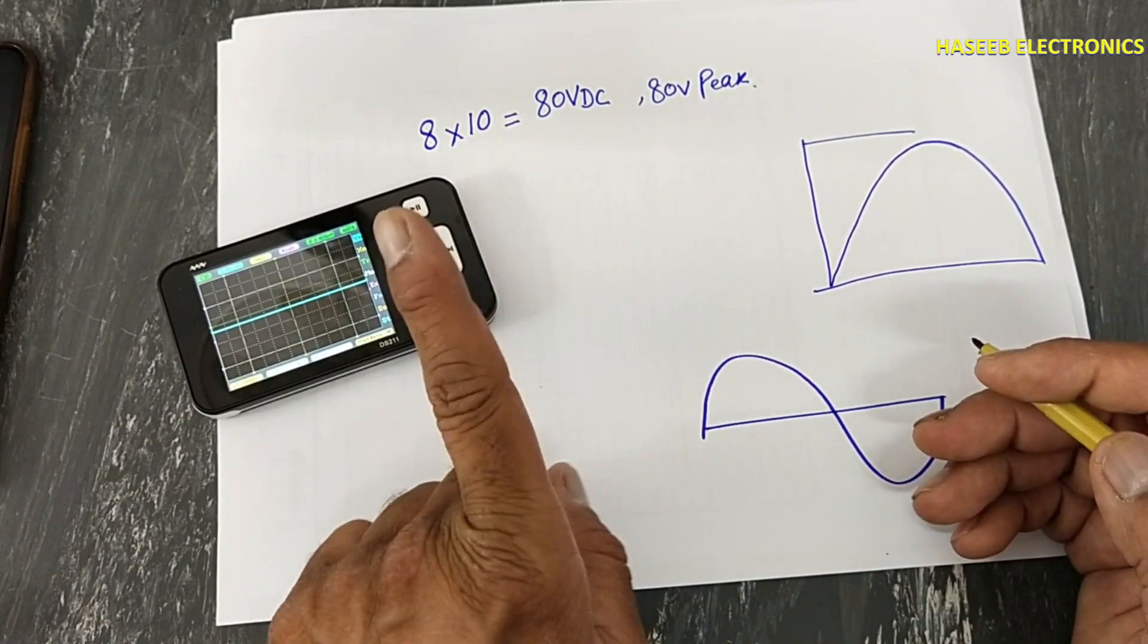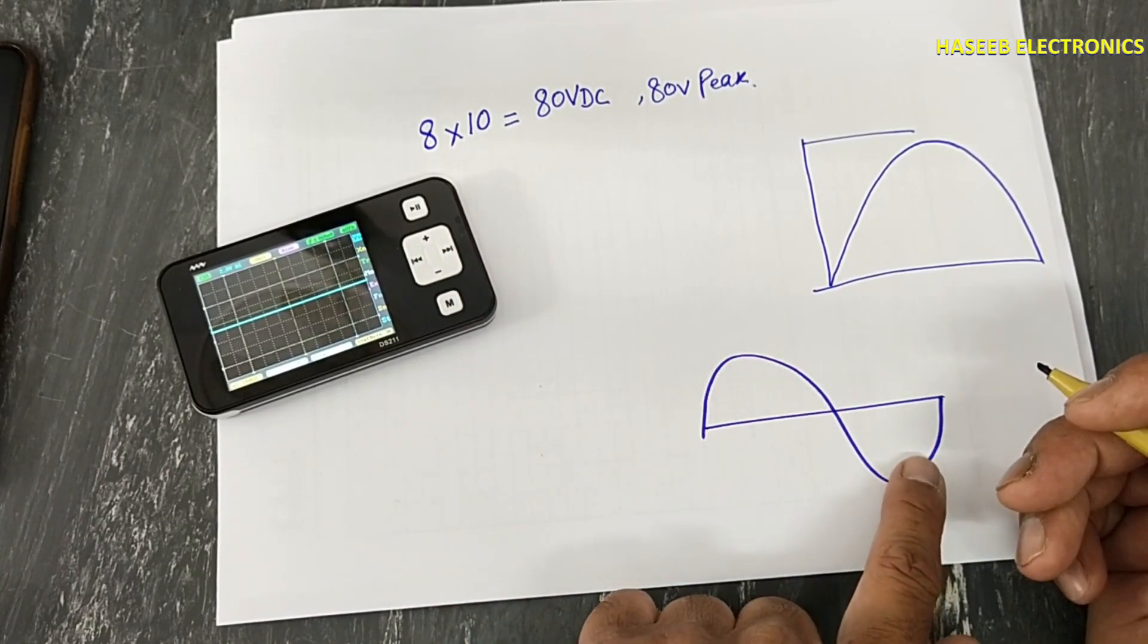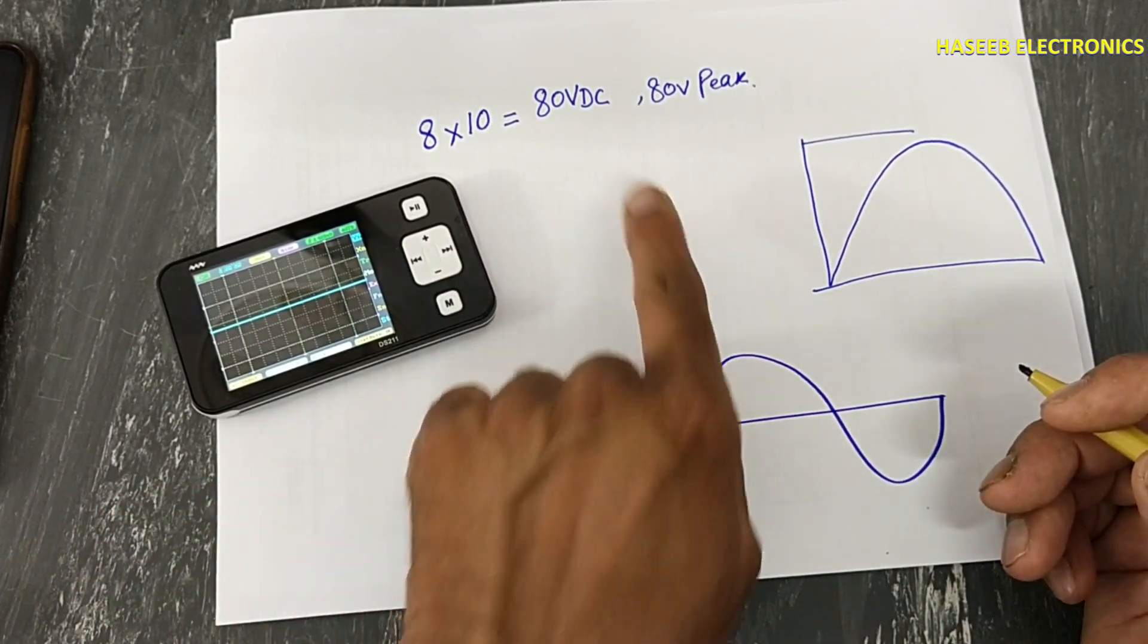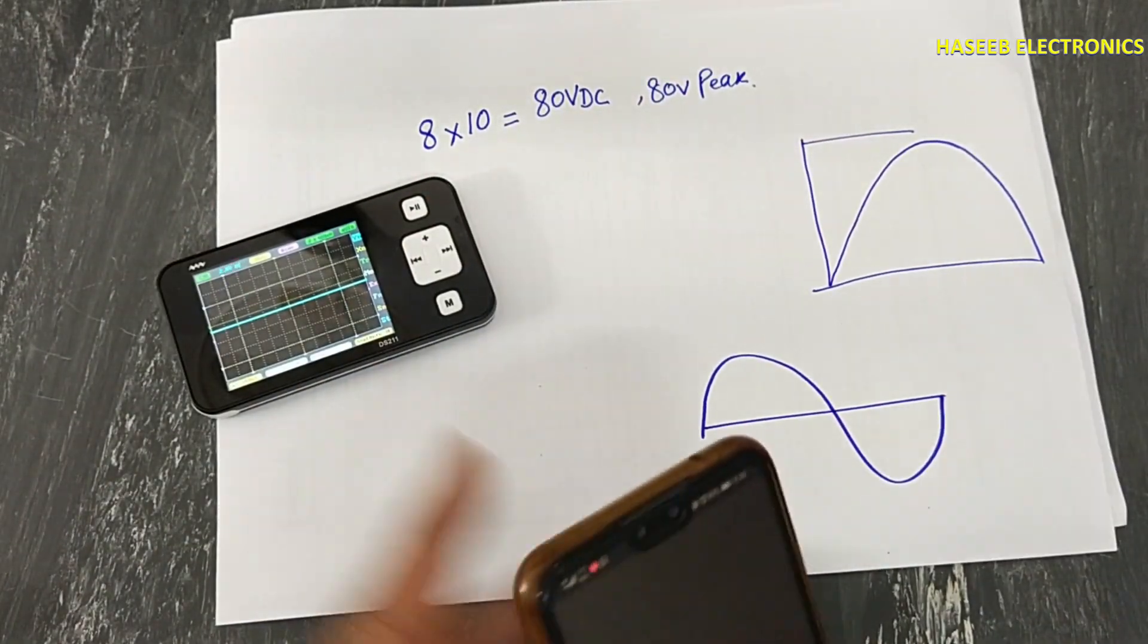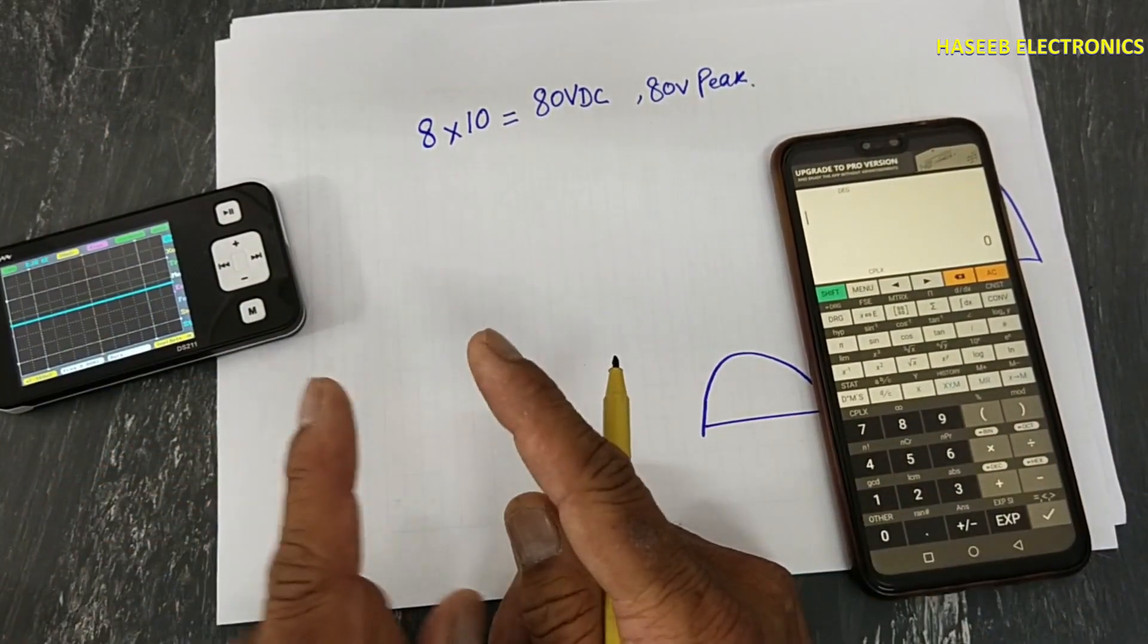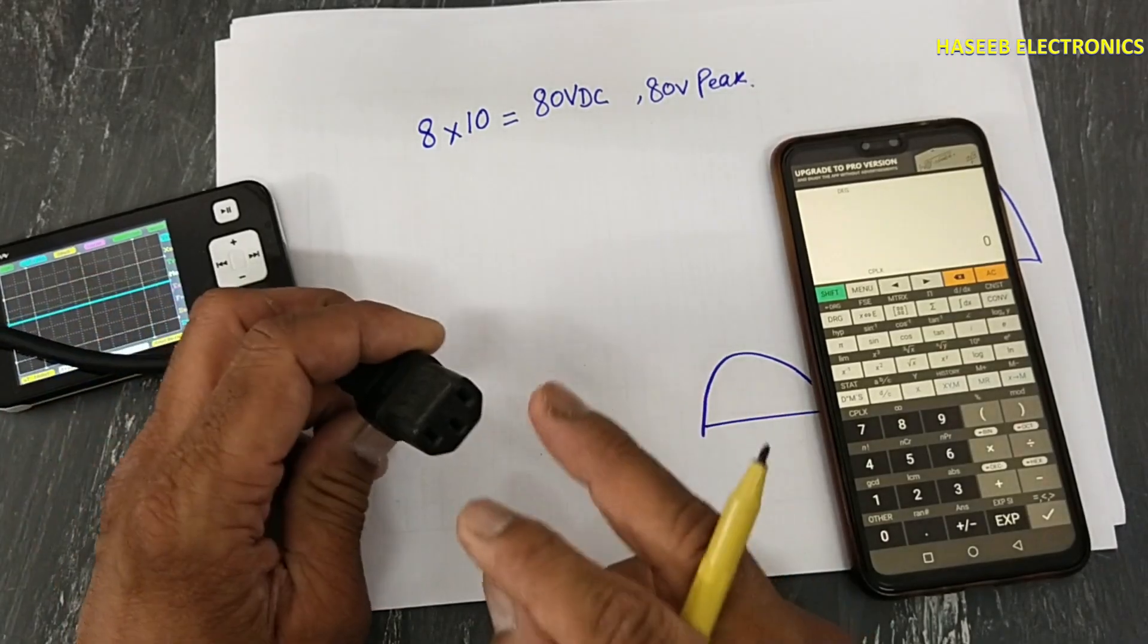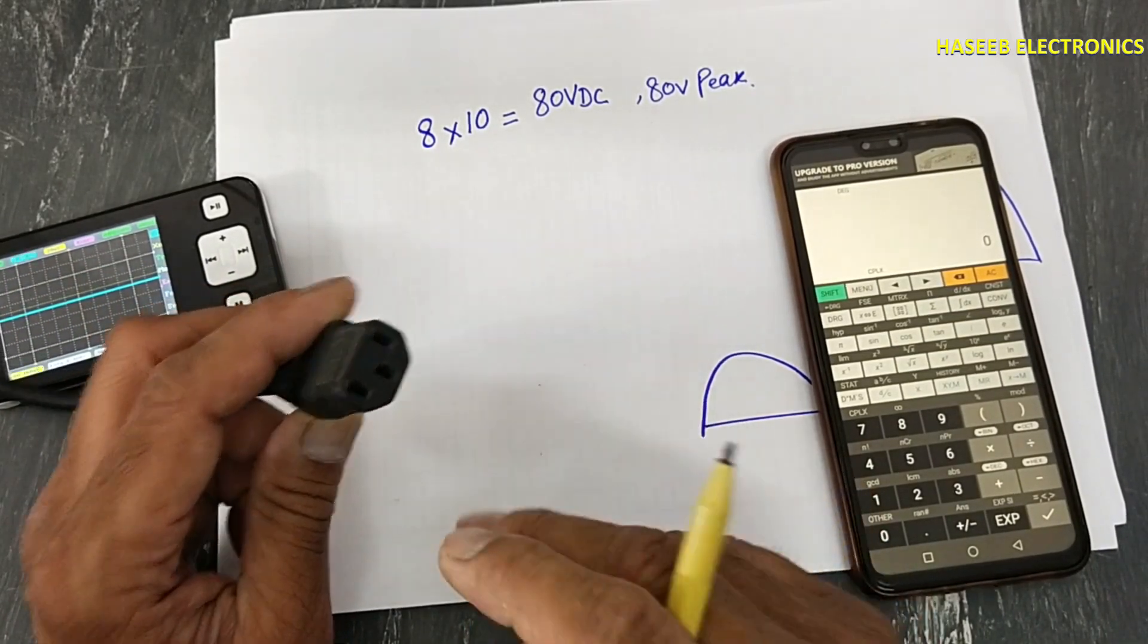If you want to test AC signal, AC signal has positive peak and negative peak. Now these are DC voltage or peak voltage. For safety, what we will do, we will test the voltage using AC multimeter on line and neutral.